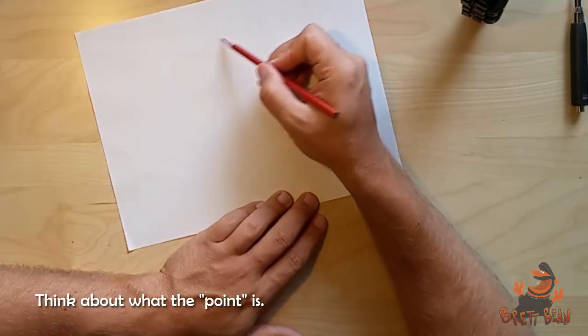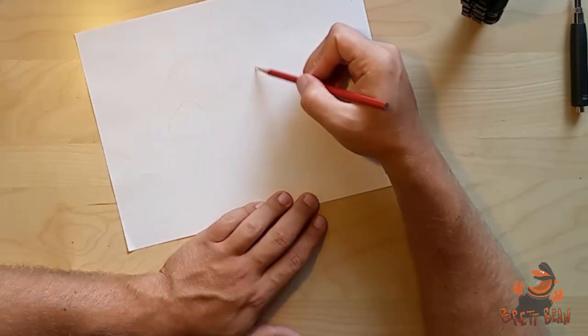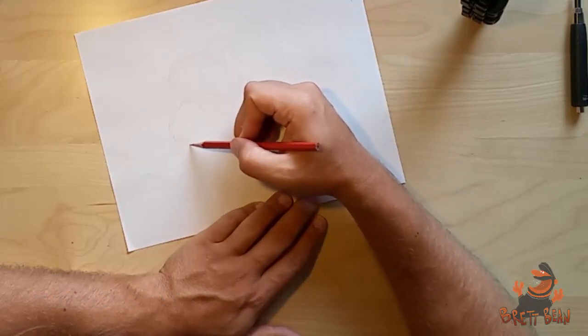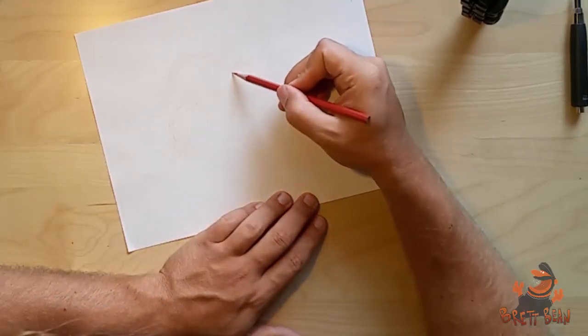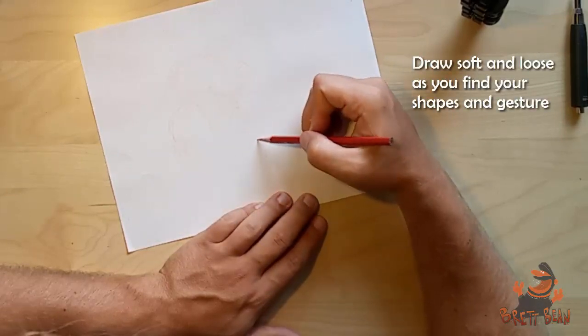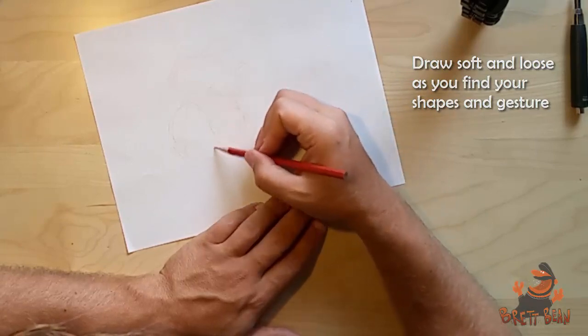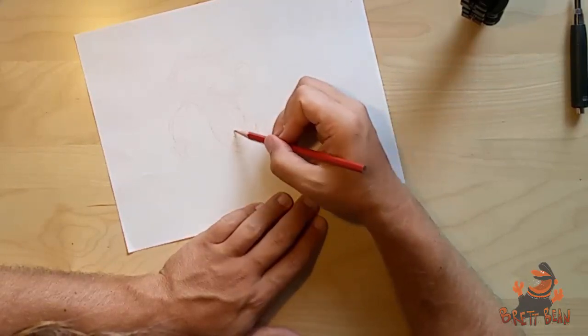The first thing you want to do is think about what the point is. What's the point of the character? What's the point of the drawing? Usually what that is, it's the end goal of your audience, what you want them to feel or how you want them to react to that character. So thinking about what your point is is very important as I start to sketch out this guy.